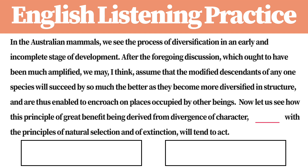In the Australian mammals, we see the process of diversification in an early and incomplete stage of development. After the foregoing discussion, which ought to have been much amplified, we may, I think, assume that the modified descendants of any one species will succeed by so much the better as they become more diversified in structure, and are thus enabled to encroach on places occupied by other beings. Now let us see how this principle of great benefit being derived from divergence of character, combined with the principles of natural selection and of extinction, will tend to act.